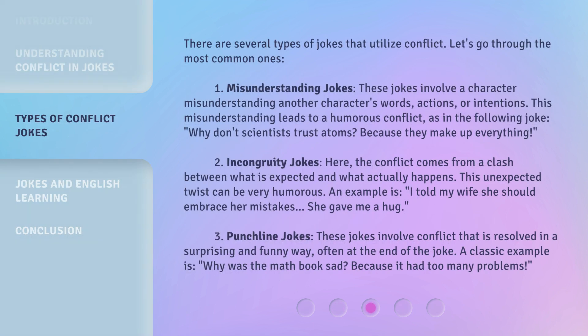There are several types of jokes that utilize conflict. Let's go through the most common ones. 1. Misunderstanding Jokes: These jokes involve a character misunderstanding another character's words, actions, or intentions. This misunderstanding leads to a humorous conflict, as in the following joke: Why don't scientists trust atoms? Because they make up everything.